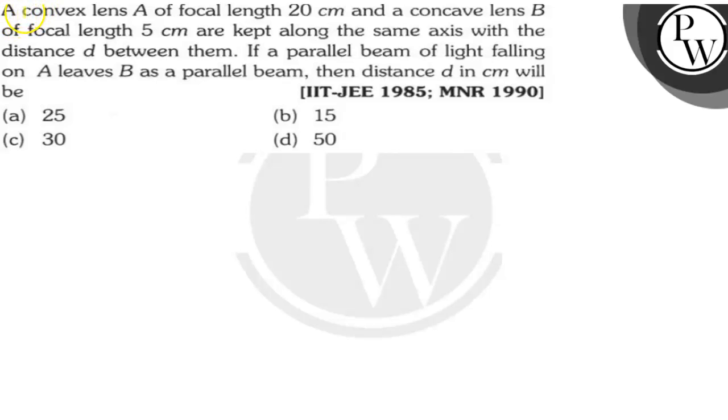Hello kids, let's see the question. A convex lens A of focal length 20 cm and a concave lens B of focal length 5 cm are kept along the same axis with distance D between them. If a parallel beam of light falling on A leaves B as a parallel beam, then the distance D in cm will be?